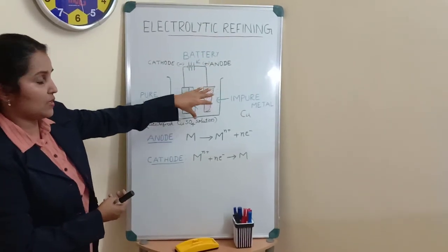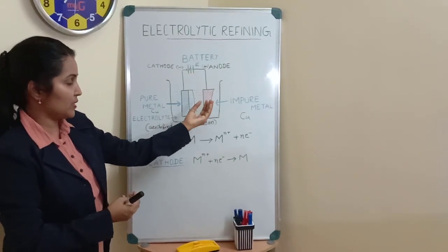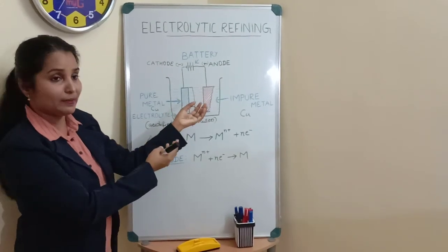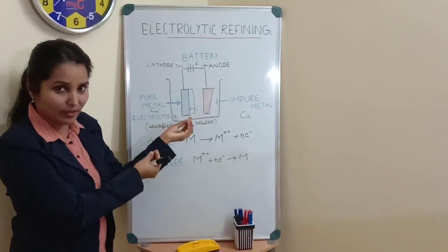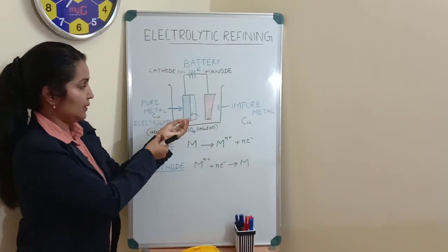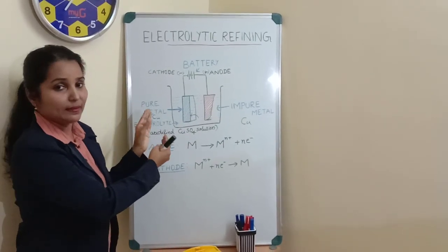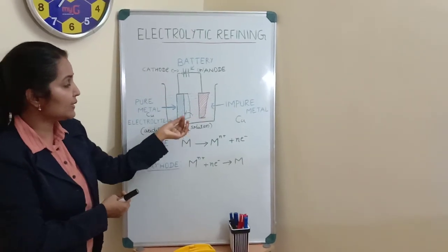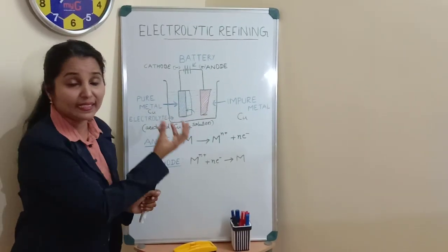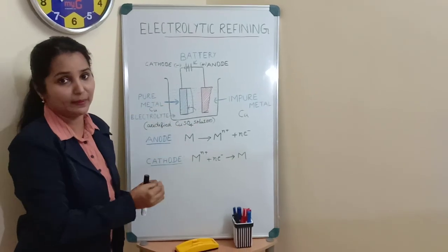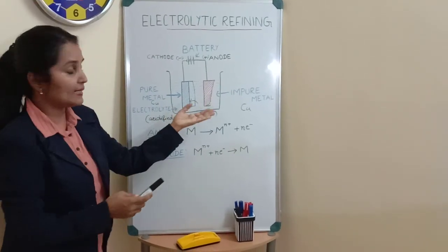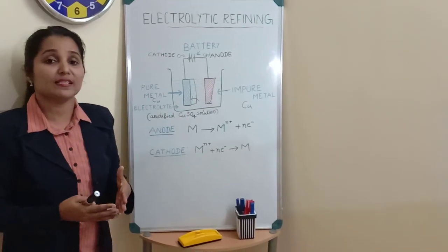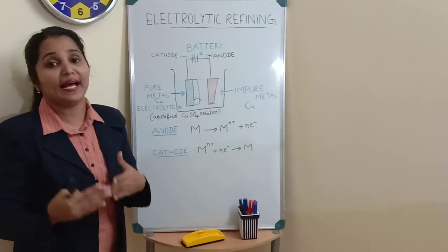During this process, when the Cu²⁺ ions are coming, the impure metal is getting dissolved in the electrolyte and coming to the cathode to get attached by accepting electrons to become metal. During that process, the impurities associated with the impure metal will be coming down and settling at the bottom of the solution. That is known as anode mud or anode sludge.